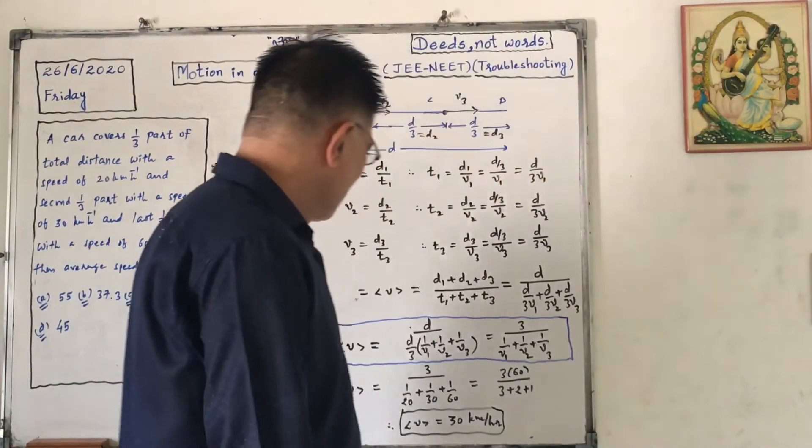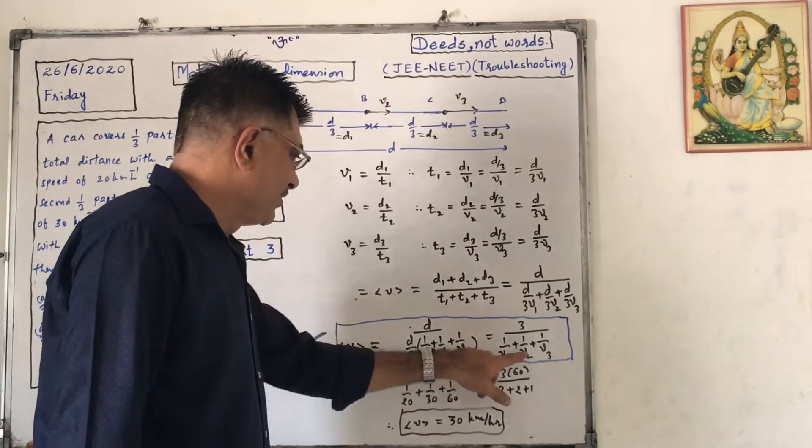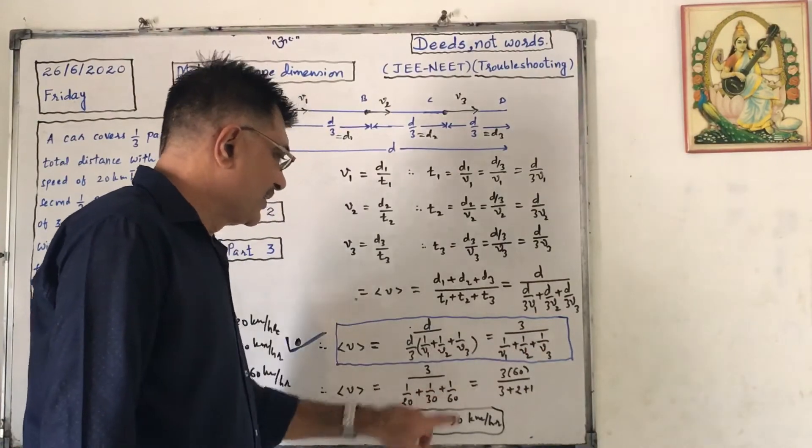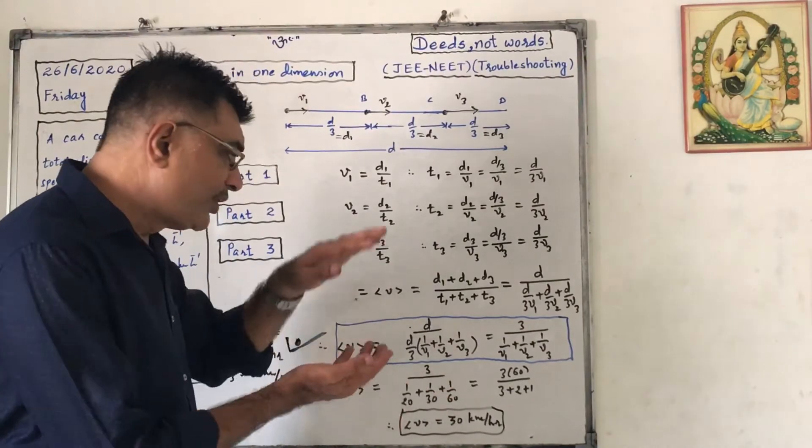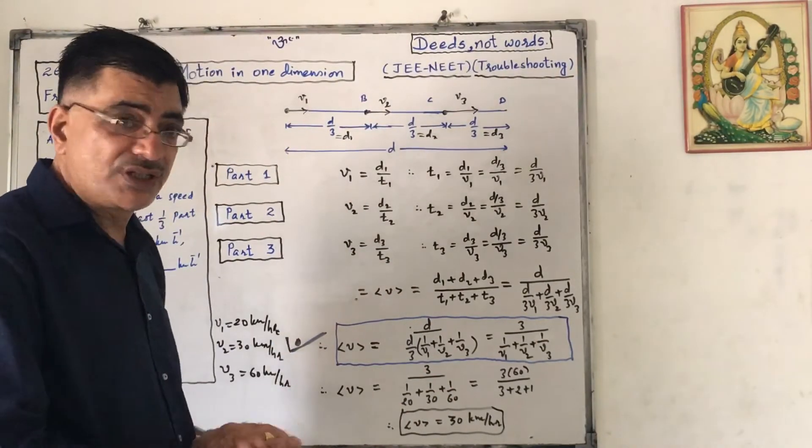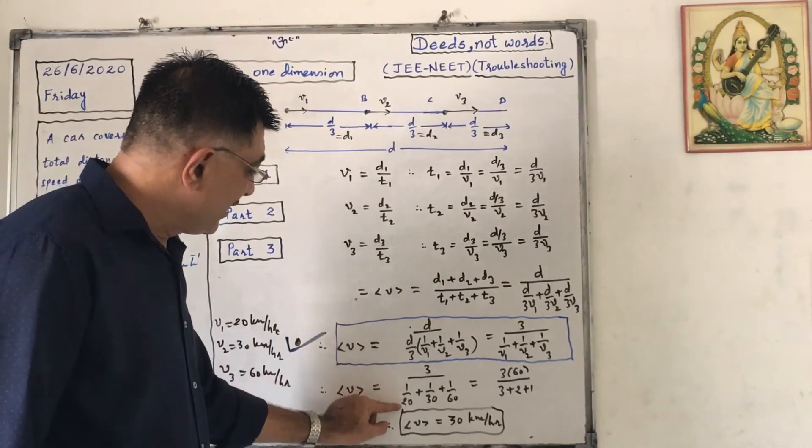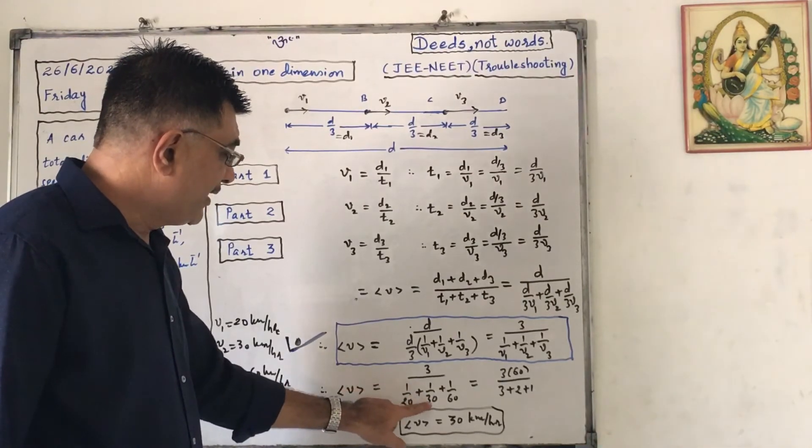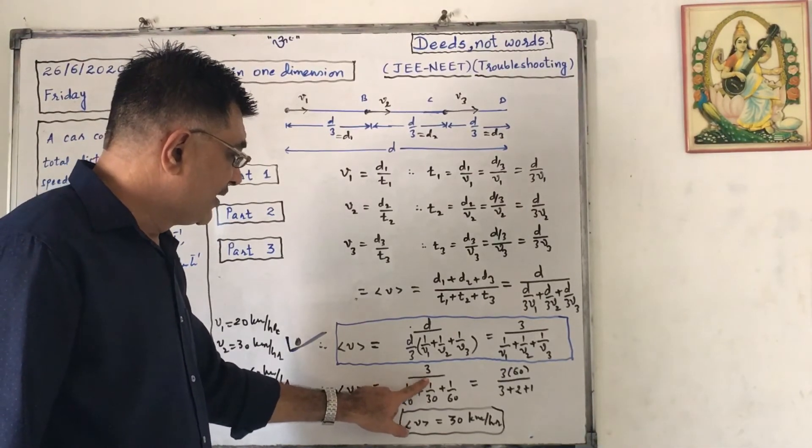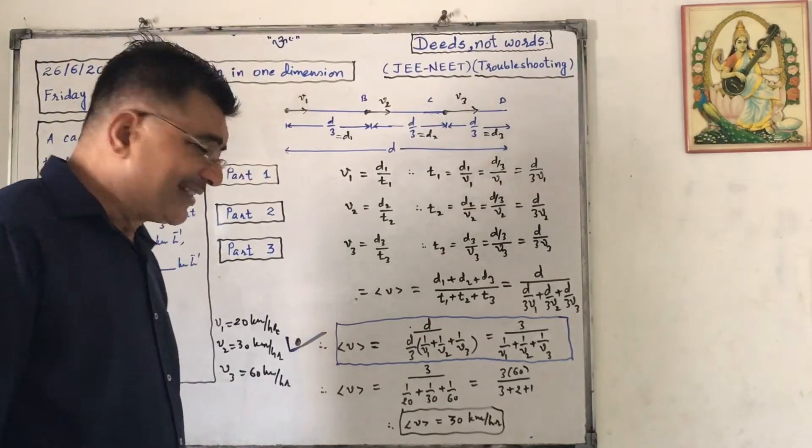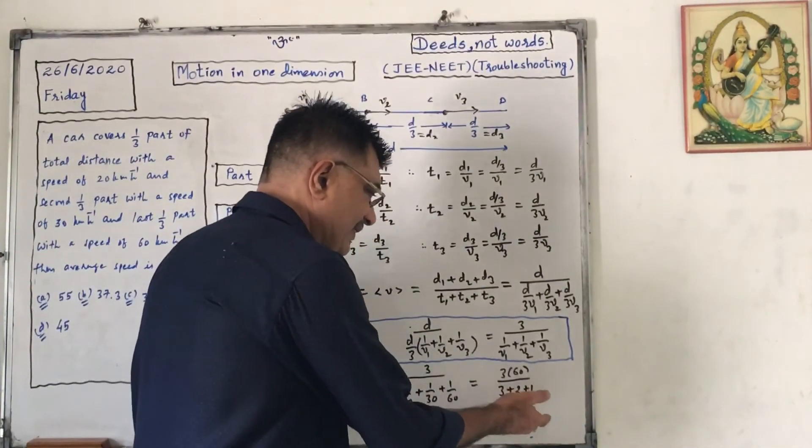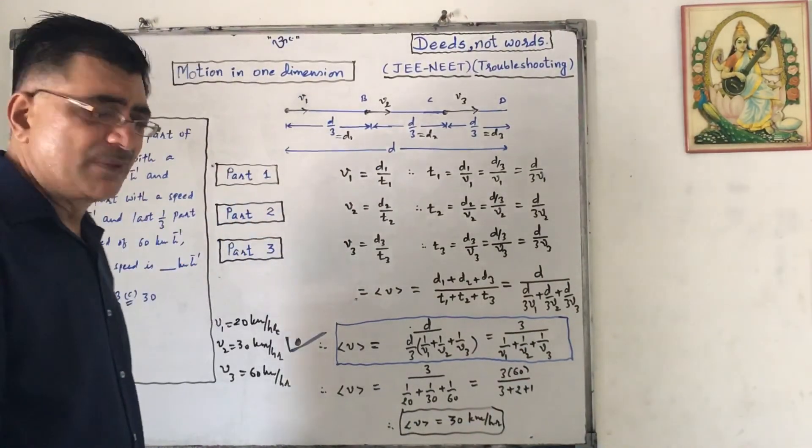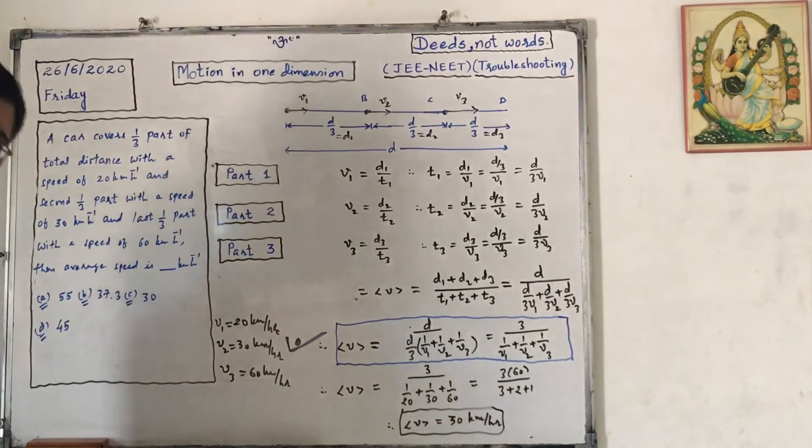Putting the values, we know that V1 equals to 20, V2 equals to 30, V3 equals to 60. So we know that LCM will be 60, so here it will be 60, that 60 will go in numerator, so 3 into 60. To make here 60, I have to multiply here by 3. To make it 60, I have to multiply here by 2, and here it is 1. So 3 plus 2 plus 1 is 6, so 60 by 6, that is 10. So 10 into 3, that is 30 km per hour. So our answer is C.